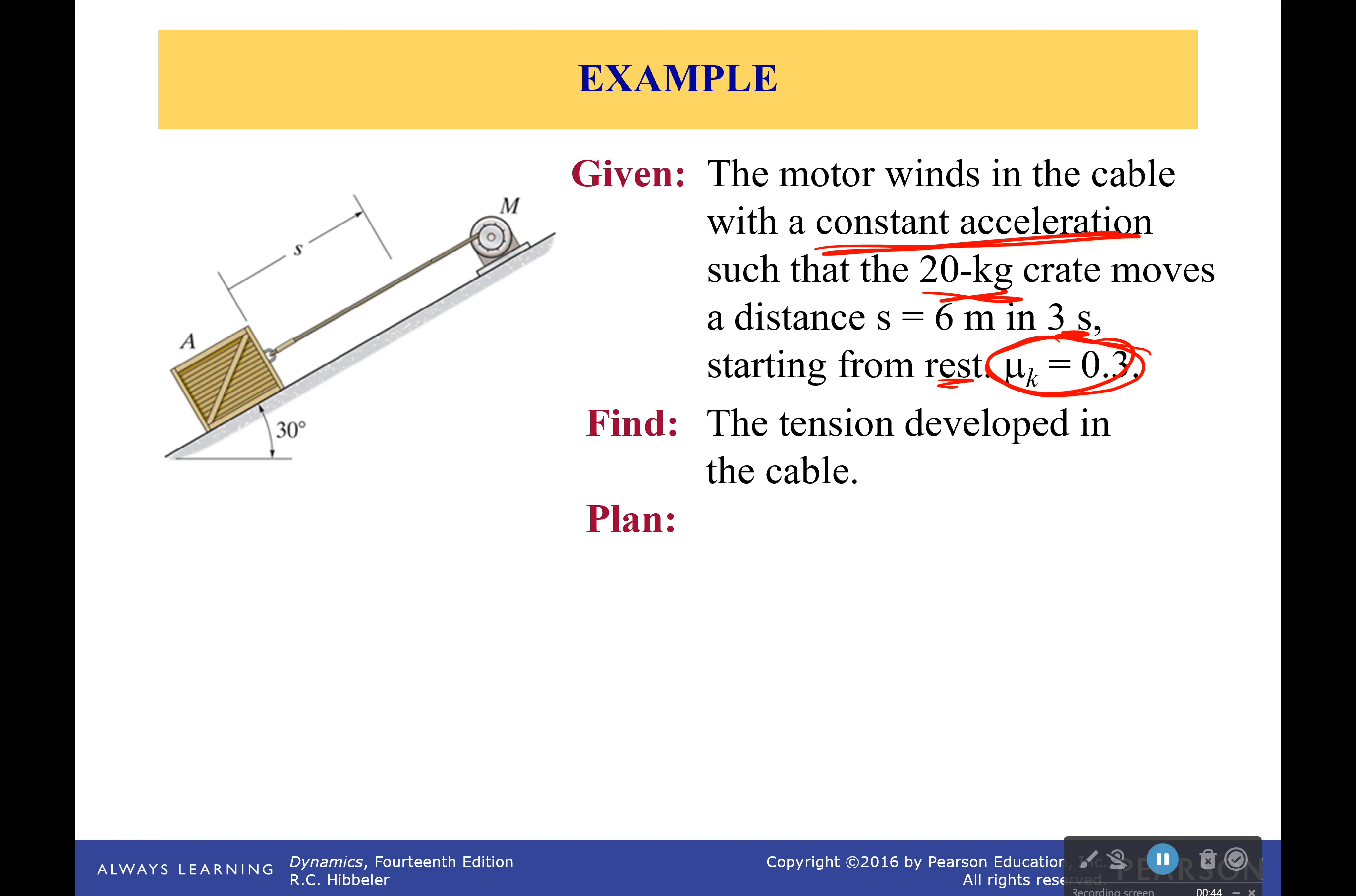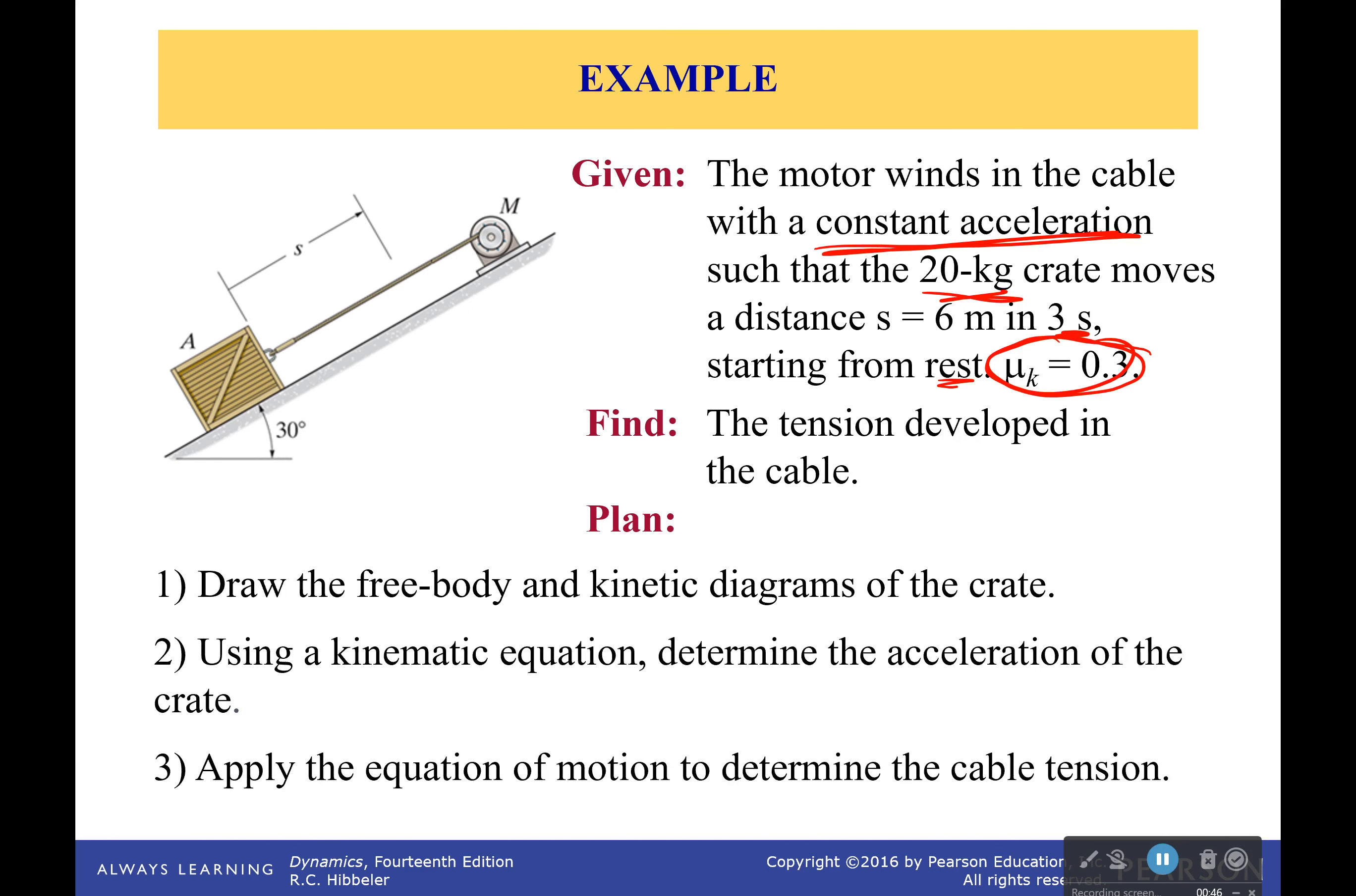So I want you to solve this. I want you to try it on your own, but as always, I'm going to give you a little plan here to help you out. Now, the plan is first, draw a free body and kinetic diagram of the crate, then using our kinematic equations, determine the acceleration of the crate, because even though it's said it's constant, it doesn't have to tell you what value it is, and finally, apply the equations of motion, that's that whole force equals mass times acceleration thing, to determine the cable tension.